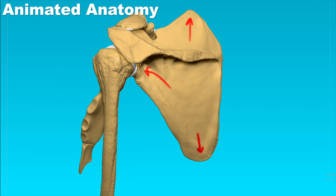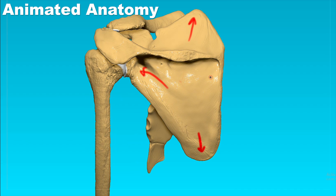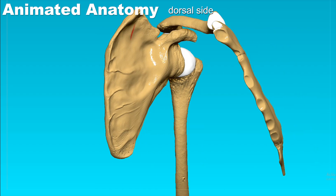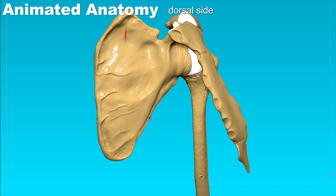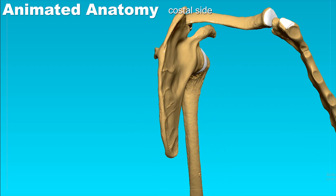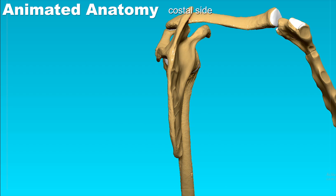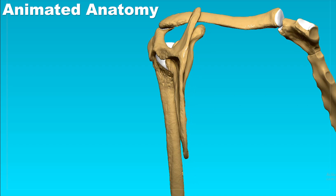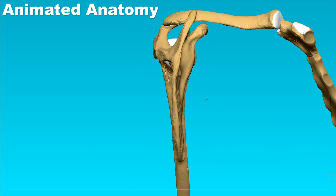It also has two sides: this would be the dorsal side and this would be the costal side. It is slightly curved to match the thorax and the ribs.